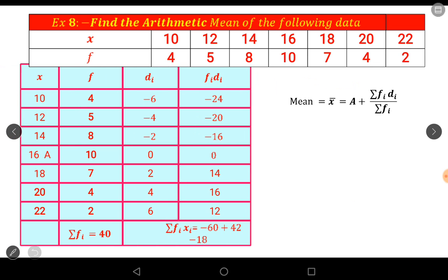Here sigma f_i d_i equal to minus 18, sigma f_i is equal to 40. Mean equal to A plus sigma f_i d_i by sigma f_i. X̄ is equal to 16 plus in the bracket minus 18 by 40. So 16 minus 0.45. Therefore mean equal to 15.55.